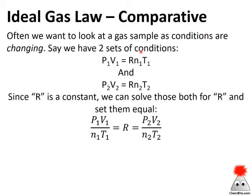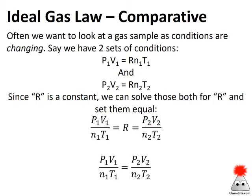If we've got two sets of conditions, we can use a different form of the ideal gas law. P₁V₁ equals R times N₁T₁ for the first set, and the same law for the second set. Since R is a constant, we can solve for R and set them equal, arriving at the comparative form: P₁V₁ / (N₁T₁) = P₂V₂ / (N₂T₂). This ends up being a pretty useful version in many situations.